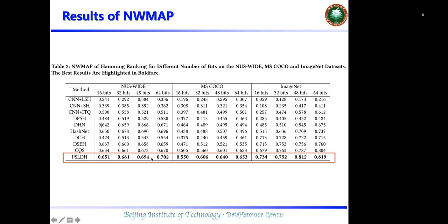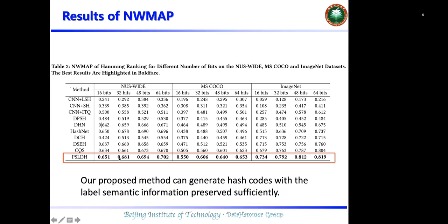Moreover, this is the result for Precision@N WMAP, and the results are shown in this table. It can be found that all proposed methods achieve the best NWMAP results, which means all proposed methods can generate hash codes with the labeled semantic information preserved sufficiently.